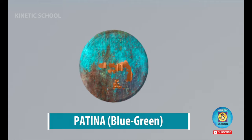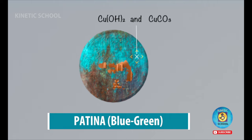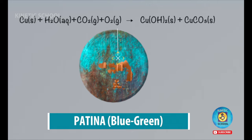Blue-green color on copper, which is known as patina. This blue-green chemical consisting mainly of copper hydroxide and copper carbonate. It is formed when copper reacts with water vapor, oxygen and carbon dioxide in the air.